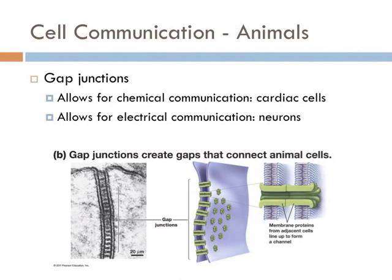An electrical synapse is a mechanical and electrically conductive link between two abutting cells. Electrical synapses are often found in neural systems that require the fastest possible response, such as defensive reflexes. An important characteristic of electrical synapses is that most of the time they are bidirectional, meaning they allow impulse transmission in either direction — your nerves talk to your brain and your brain talks to your nerves. Chemical communication in these types of cells only happens in one direction.